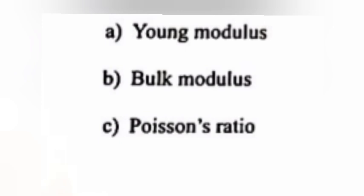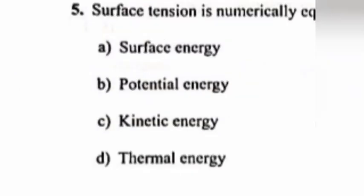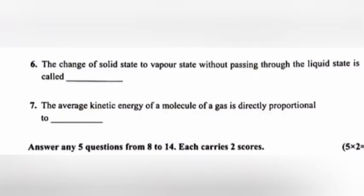A: Young's modulus, B: bulk modulus, C: Poisson's ratio. Answer: A, Young's modulus. Question 5: Surface tension is numerically equal to: A, surface energy; B, potential energy; C, kinetic energy; D, thermal energy. Answer: A, surface energy.